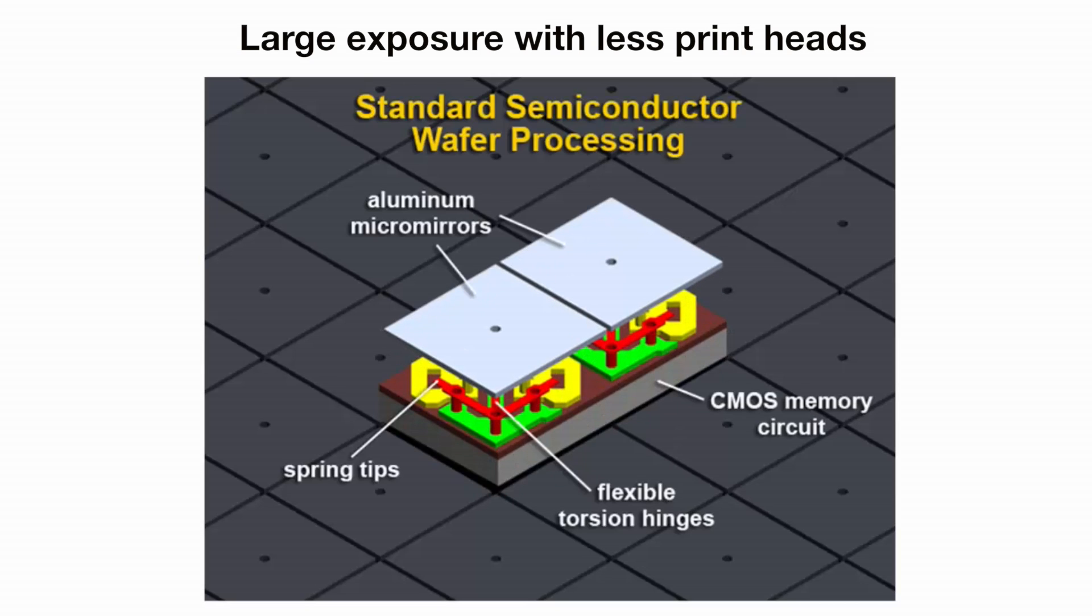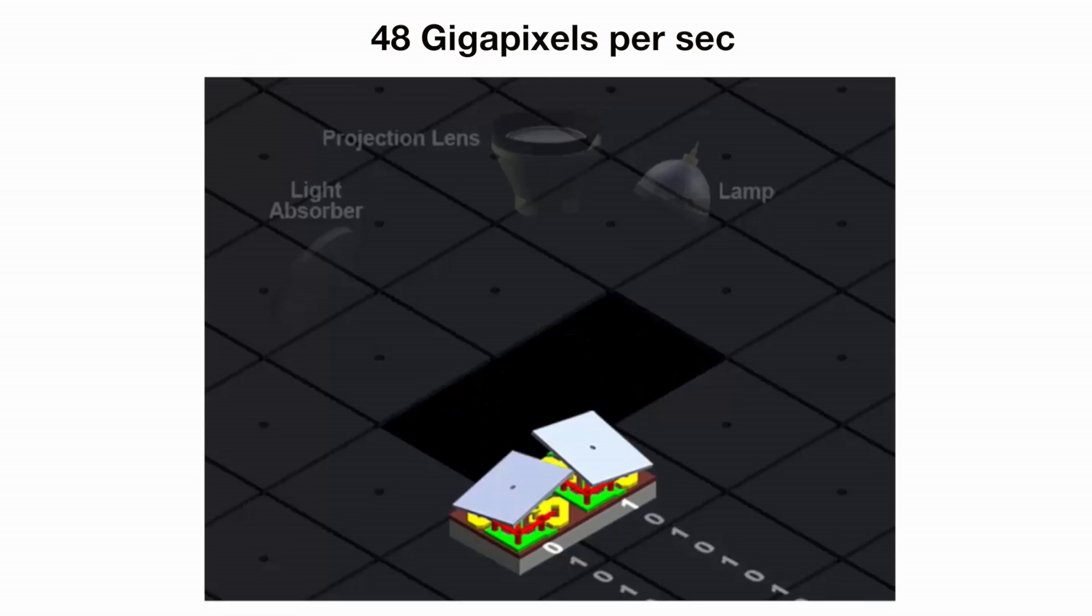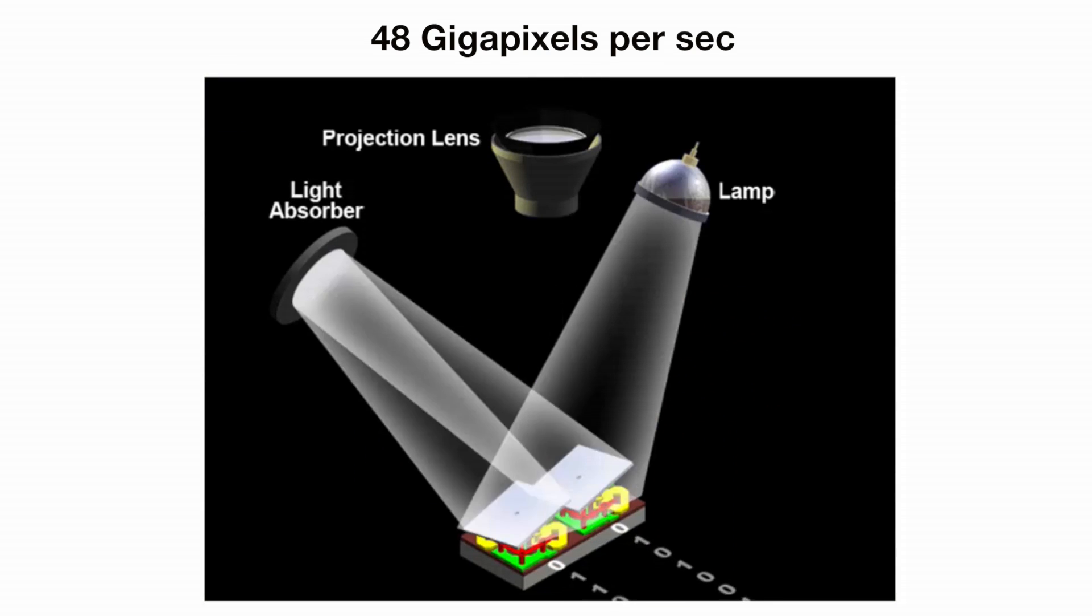With the technology's unique high-speed capabilities, you can load pixels as fast as 48 gigapixels per second for fast production exposure times.